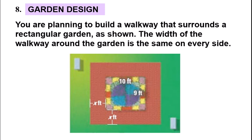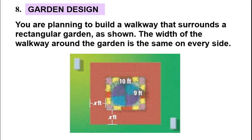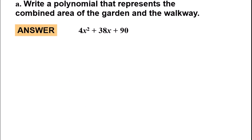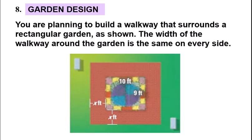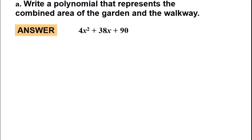Garden design: you are planning to build a walkway that surrounds a rectangular garden. The walkway width is the same on every side, the garden is 10 by 9, and you need to write a polynomial for the combined area of the garden and the walkway. Since you're adding the walkway, the dimensions become 2x plus 10 and 2x plus 9. FOILing: 2x times 2x gives 4x squared, the outer term gives 18x, the inner term gives 20x, and the last term gives 90, so combining like terms you get 4x squared plus 38x plus 90.